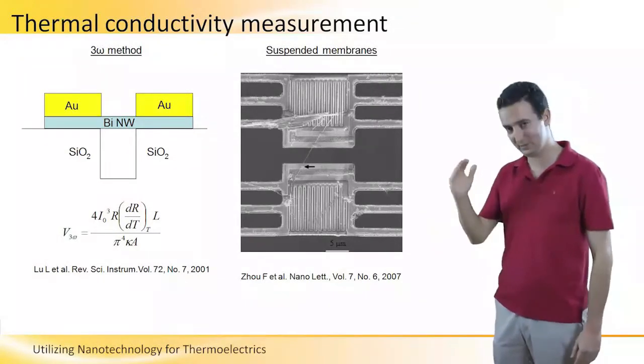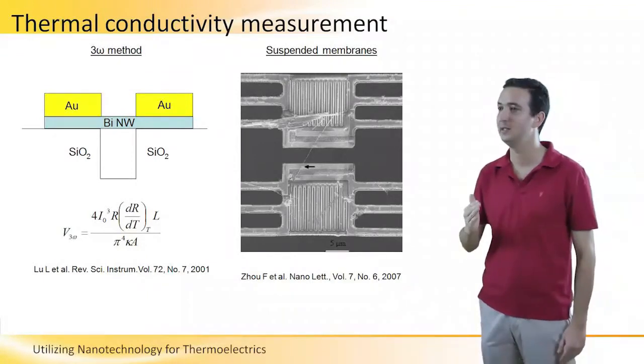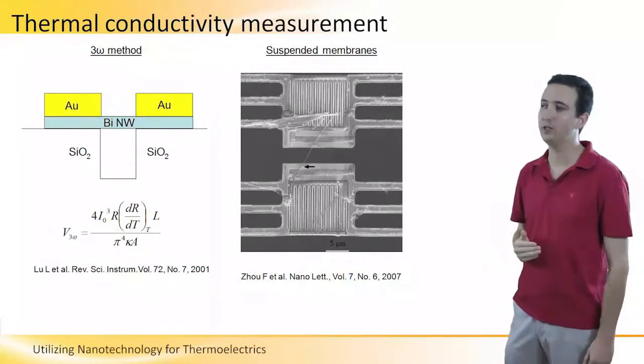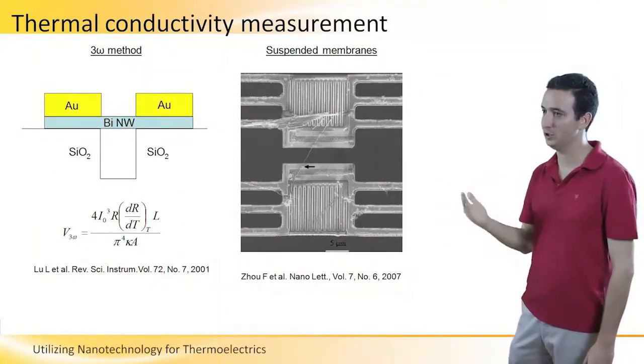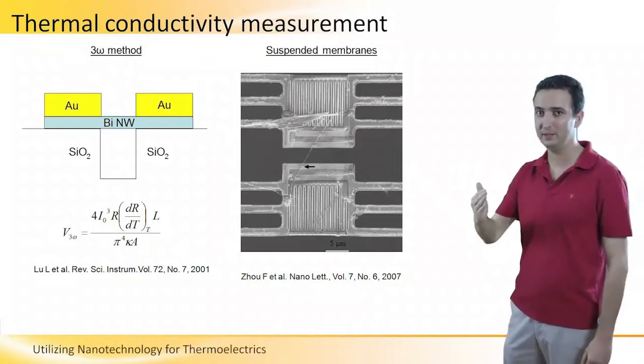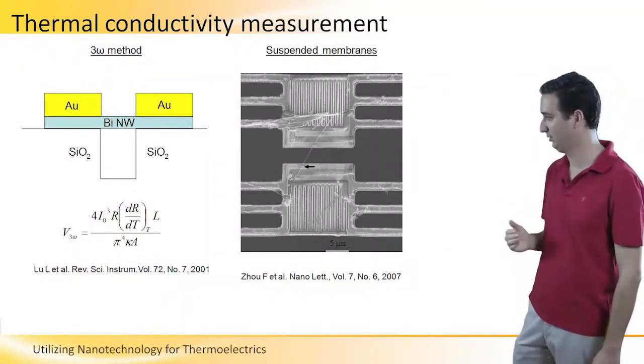You get from 1 Omega frequency of the current to 2 Omega in the temperature. Now, because the resistance depends on the temperature, this 2 Omega fluctuation leads to a 2 Omega fluctuation in the resistance along the nanowire.